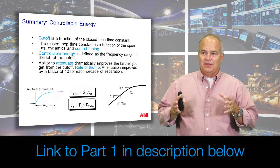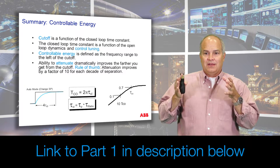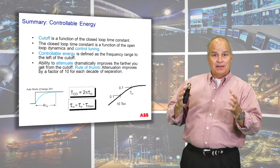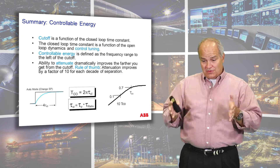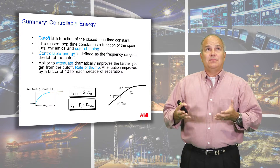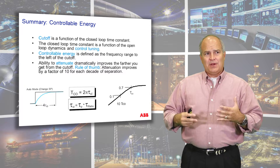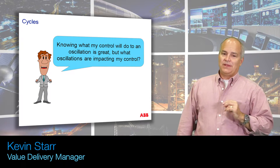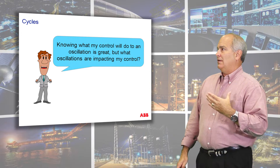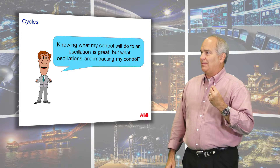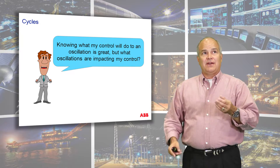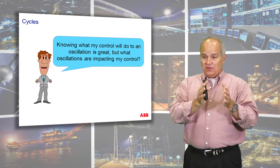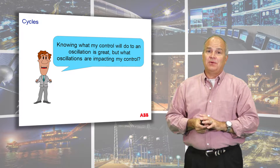That was just a quick summary on why we're interested in frequency content — because our control is designed for a frequency band. If you know how you tuned your loop, you can know how it's going to respond. But the question is: how do I know what frequencies are coming into my process? That's what we're looking at here with cycles — the cyclic energy in my process — so you can know how much you're going to attenuate at different frequencies.